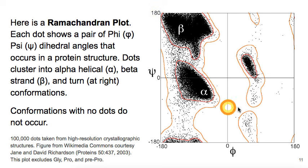Each dot represents the phi and psi angles that actually occurred in a single amino acid in one of a large number of reliable protein structures.